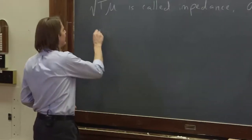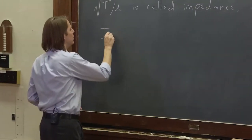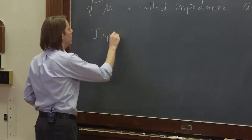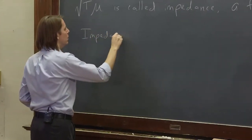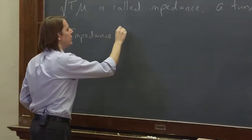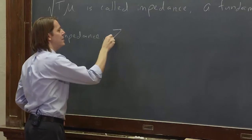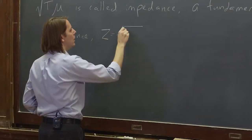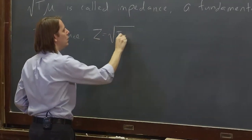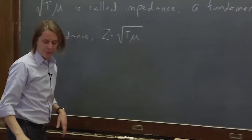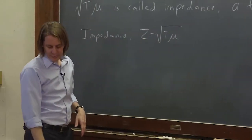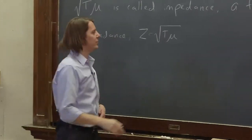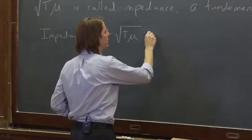The impedance, usually labeled z, is one way to think of it as the resistance to transverse motion.